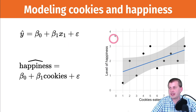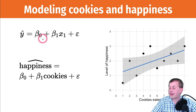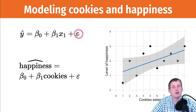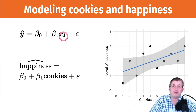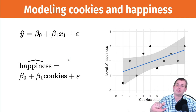Going back to the cookie and happiness example: here's our graph showing cookies eaten versus happiness, and our best-fit OLS line that minimizes the squared distance between points and the line. We can write this as our estimate of y — predicted happiness — based on some intercept, some slope, the number of cookies, and some unknown error. The y-intercept is approximately 1.1 or 1.2.